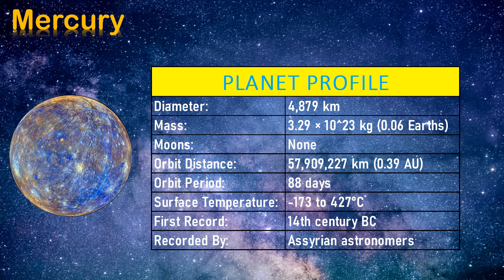The orbit distance is 57,909,227 kilometers. The orbit period is 88 days. The surface temperature of planet Mercury ranges between minus 173 degrees Celsius to 427 degrees Celsius. This planet was first recorded somewhere around the 14th century BC by Assyrian astronomers.